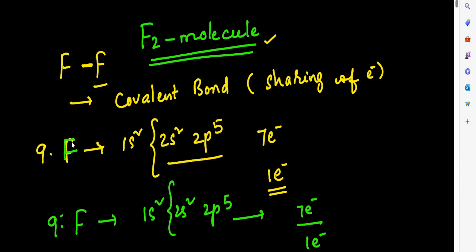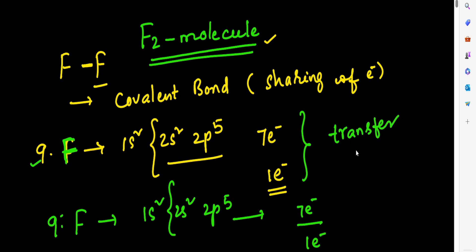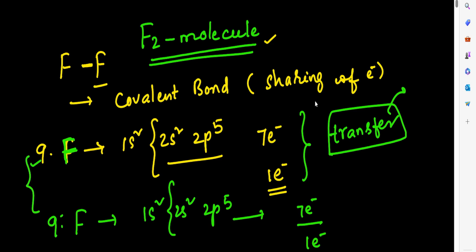Now, how will the bond form between these two fluorine atoms? If the first fluorine atom donates one electron to the other, does it get octet configuration? No. Similarly, if the second fluorine atom donates one electron to the first, does it get octet configuration? No. So transfer of electrons is not possible — that would form an ionic bond, but that doesn't happen here.